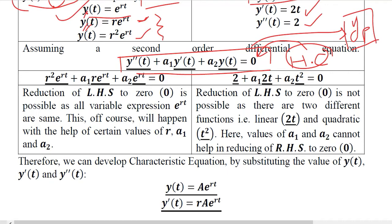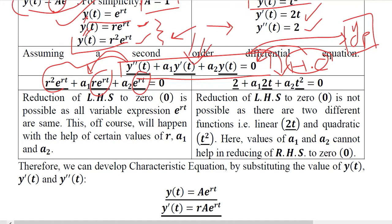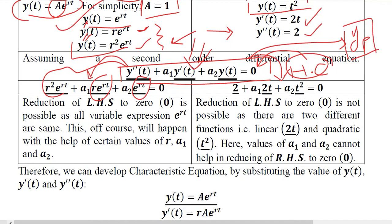So if I put these values, that is this set of values and that set of values in this standard form, it will become this and it will become that. This is the first possibility that Y double bar T is substituted here, then Y bar T and then Y. All these values are substituted here. On the right hand side we know that Y T was T square so it is substituted here. 2T was Y bar T and Y double bar T was 2. So we have substituted these values as well.